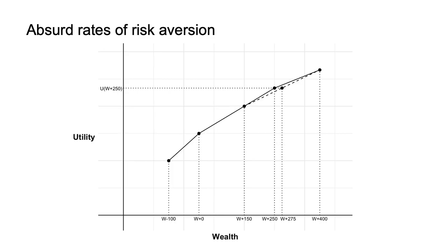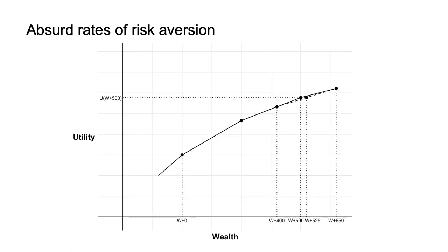Now consider what would happen if this person had $250 more wealth — that is, they have W+250. They are then offered the same bet. We have assumed they will reject the bet at all levels of wealth, so they will also reject at this wealth. We can therefore infer another piece of the utility curve for the least risk-averse they could be. Iterating the previous calculations, I can say that they will weight their (W+400)th dollar only two-thirds as much as their (W+150)th dollar.